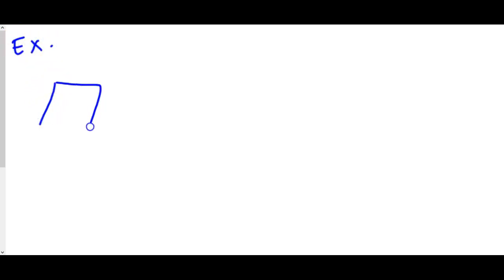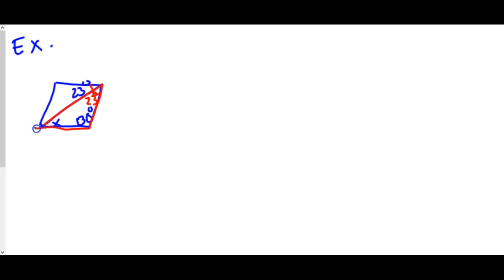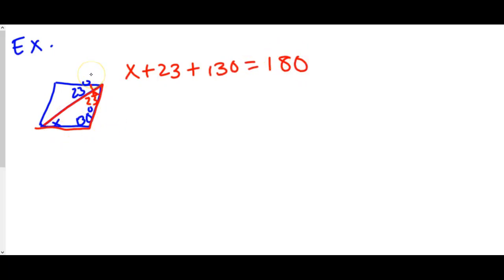Let's say we have a rhombus — and they have to tell you it's a rhombus, you can't just assume, because then you can follow its properties. We want to find x. We know that the diagonal bisects the angle at the top, so both sides of that angle are equal, meaning this angle is also 23 degrees. Now we have a triangle, and all triangles' angles add up to 180 degrees. So the unknown angle plus 23 plus 130 should equal 180.